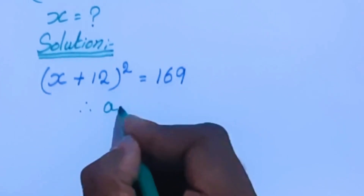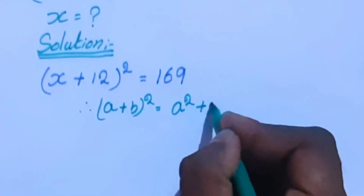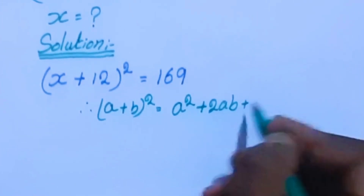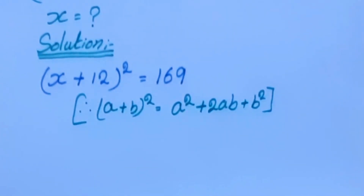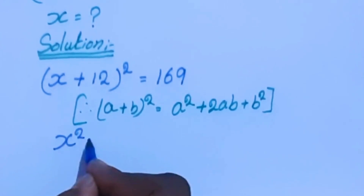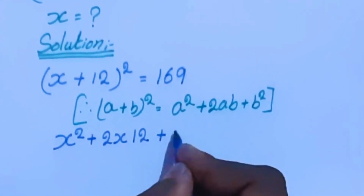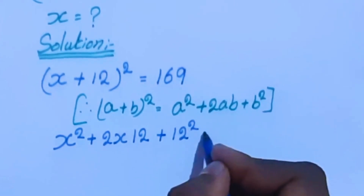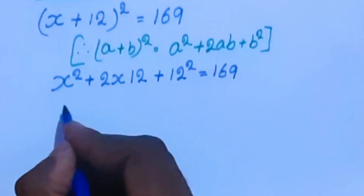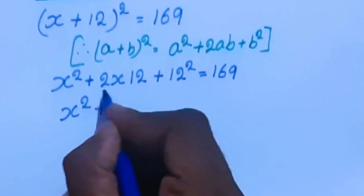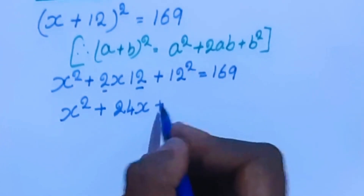The formula is: a plus b whole square equal to a square plus 2ab plus b square. Applying this formula here, we get x square plus 2 times x times 12, plus b square, that is 12 square, equal to 169.